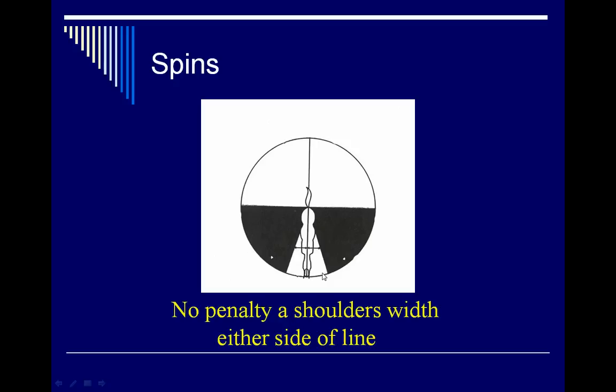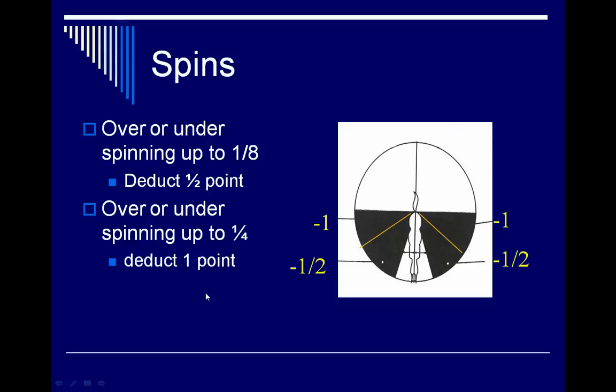Here are diagrams identifying where spin penalties occur. Horses are given about a shoulder's width on either side of the line to stop in, so it doesn't have to be right on the spot. If they go up to one-eighth beyond that zone — either overspinning or underspinning — it's a half-point penalty. If they go beyond one-eighth and up to a quarter turn, that's a one-point penalty. If they go beyond 90 degrees, that is inclusion of maneuver and results in a score of zero.